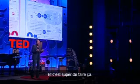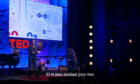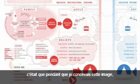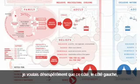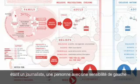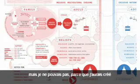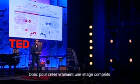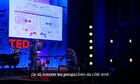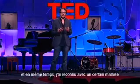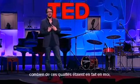And it feels just incredibly cool to do that. What was most exciting for me designing this was that I desperately wanted the left side to be better than the right side, being kind of a journalist and a left-leaning person. But I couldn't, because I would have created a lopsided, biased diagram. So in order to really create a full image, I had to honor the perspectives on the right-hand side, and at the same time uncomfortably recognize how many of those qualities were actually in me — which is very, very annoying and uncomfortable.